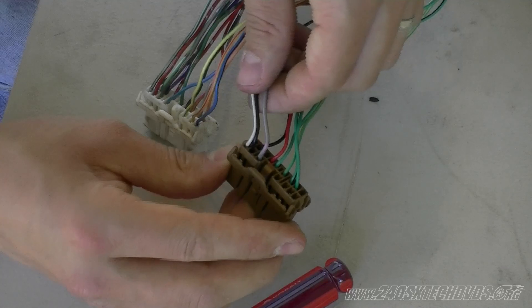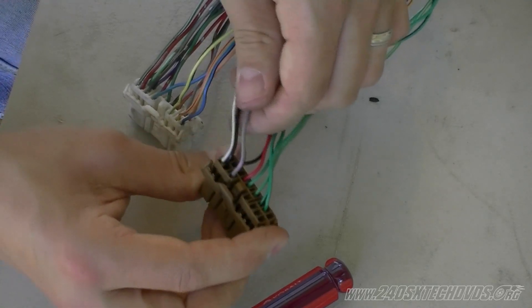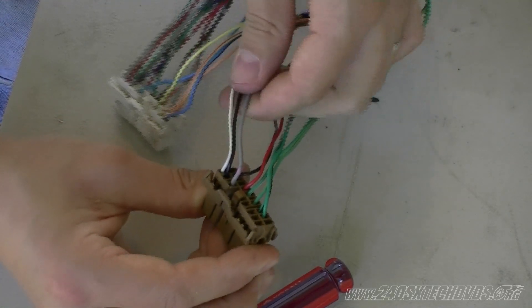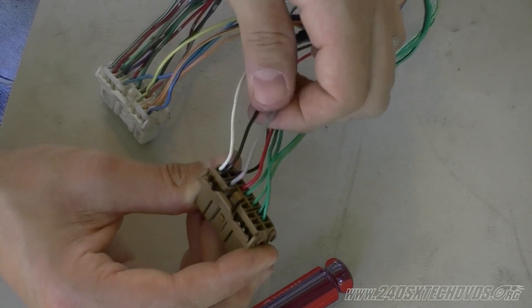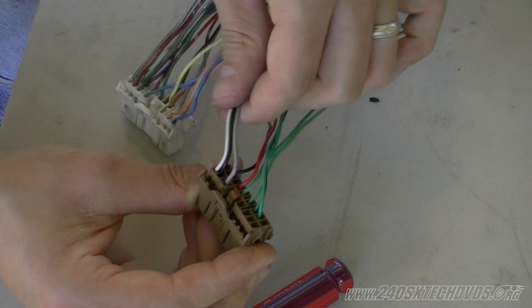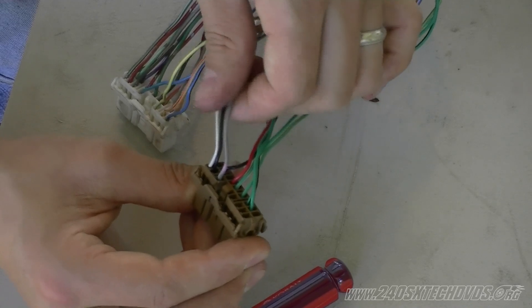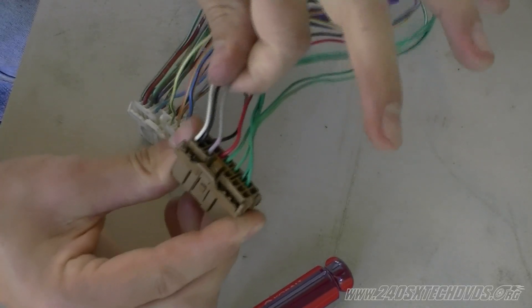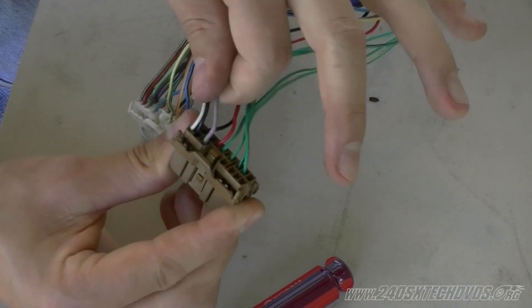We'll go back to the dual overhead harness here. This harness is for ABS because it has the gray, the black, and the white wires, whereas our single overhead car does not have ABS. So we're not going to use these wires, we're going to remove them from the connector.